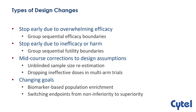The types of changes you can make at interim include stopping early due to overwhelming efficacy, futility, or harm — the group sequential designs we're all familiar with. You can also increase the sample size after an unblinded look, which is today's topic; drop ineffective doses in multi-arm trials; use biomarker-based population enrichment to focus on a subpopulation; or switch endpoints from non-inferiority to superiority. Our focus today is on unblinded sample size re-estimation.